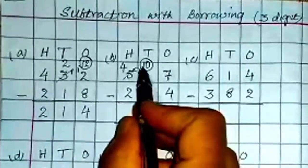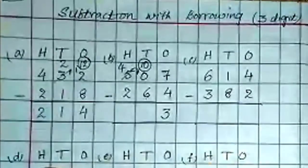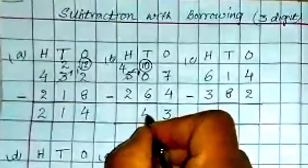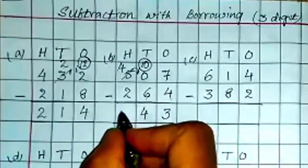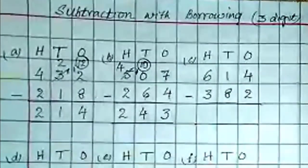Now after 6 till 10. After 6, 7, 8, 9, 10. 4 tens here. Then 4 minus 2 is 2. Understood?